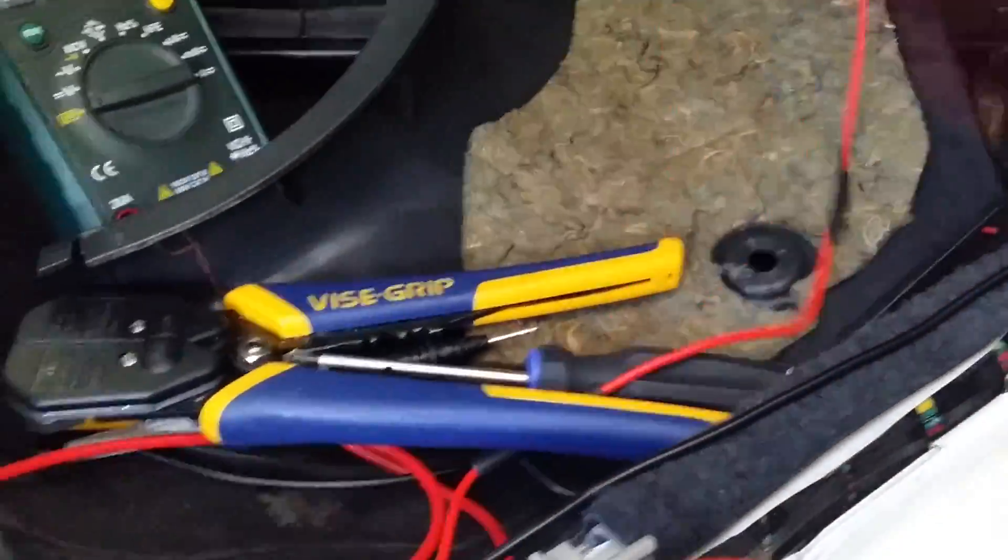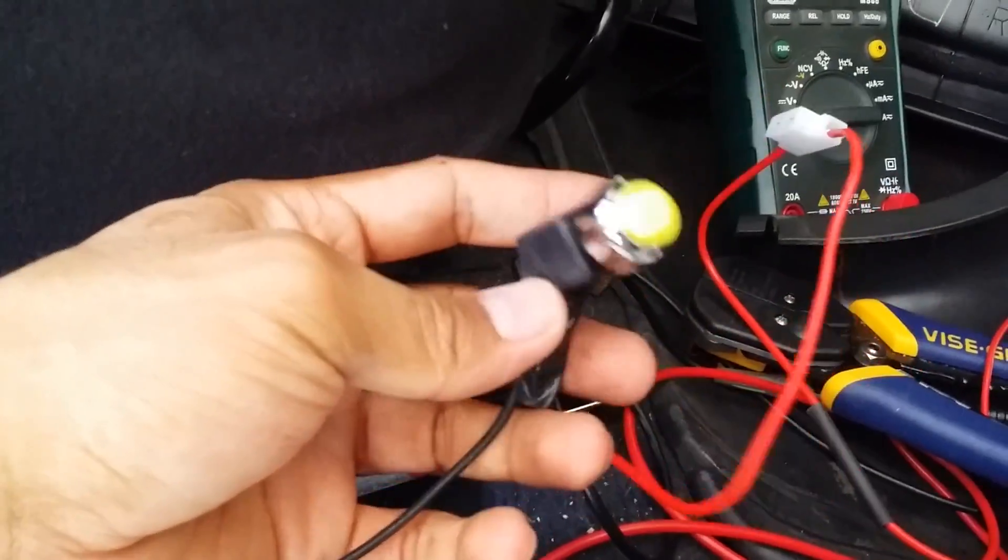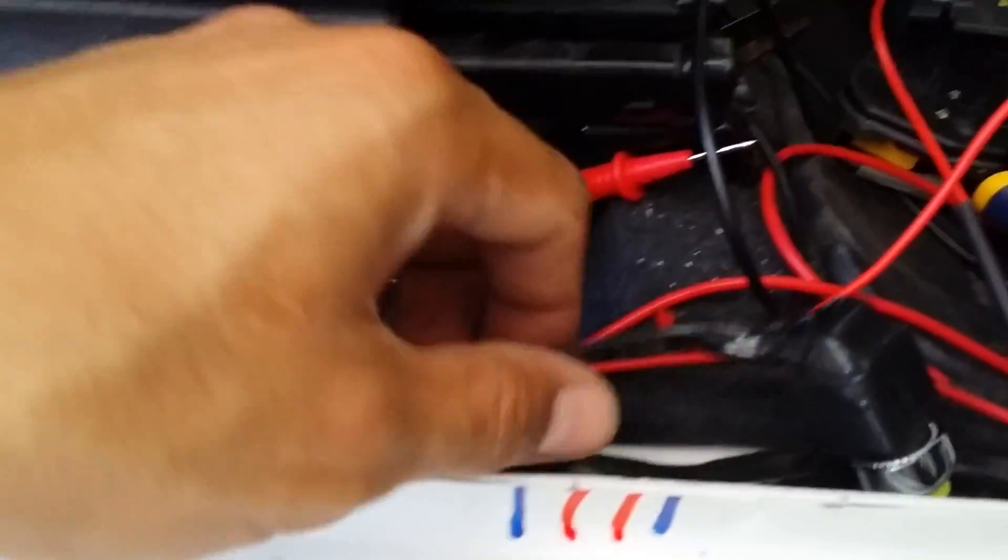Splice into the 12V constant wire using the strippers or pliers, connect the red wire that came with the solenoid kit to it, and secure it with electrical tape.